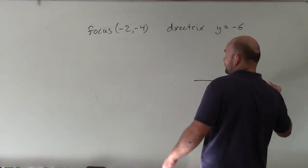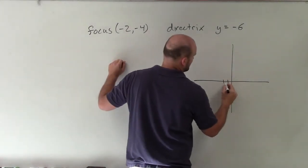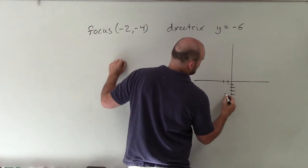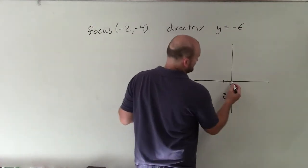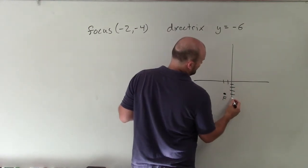So I'll go ahead and plot the focus, which is at negative 2, negative 4. And then my directrix is y equals negative 6.